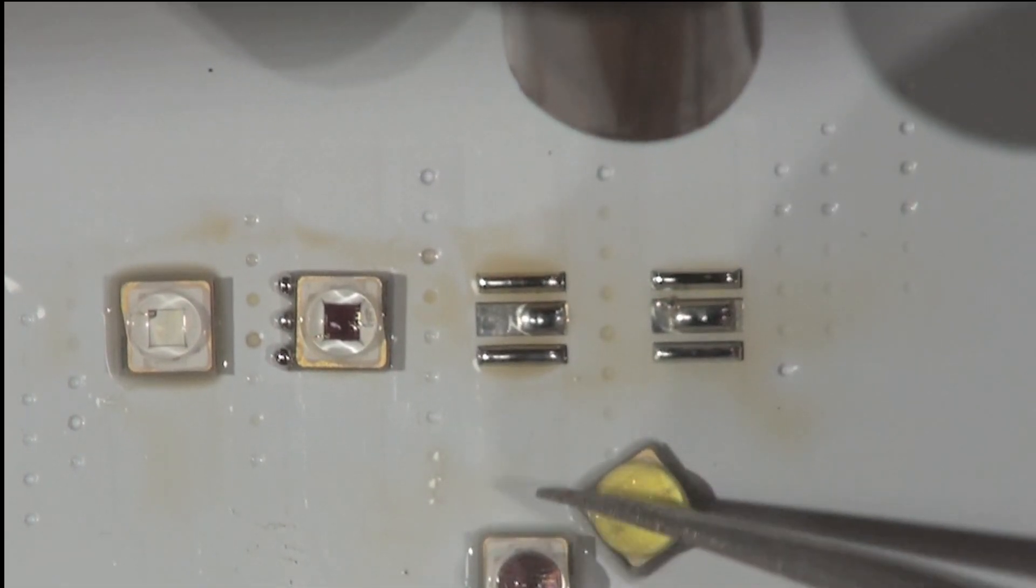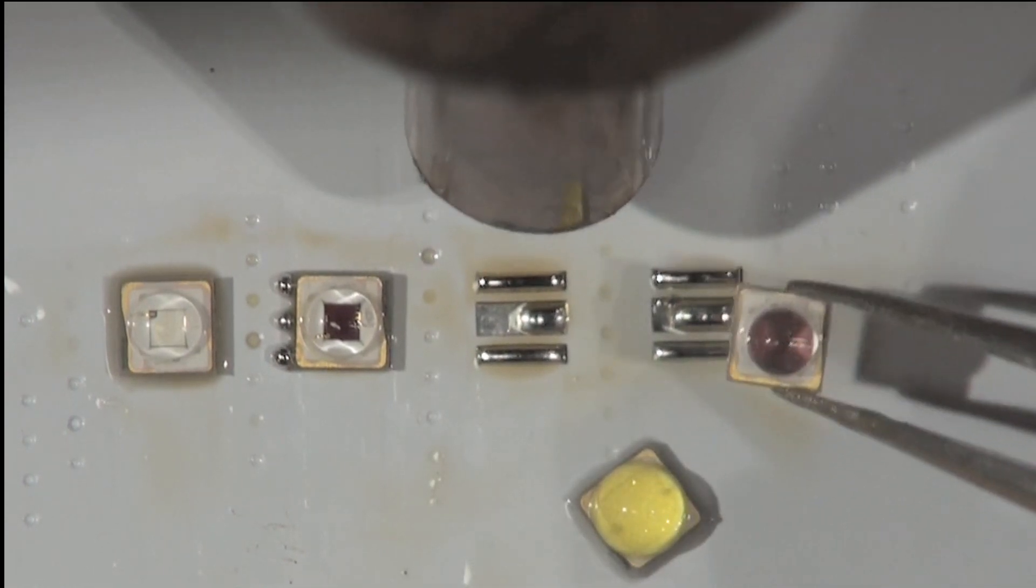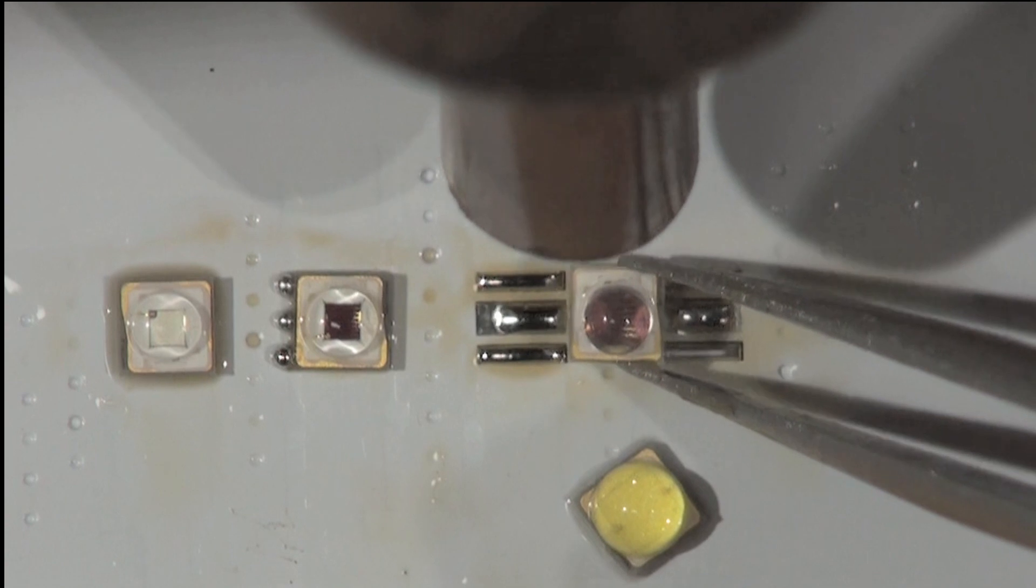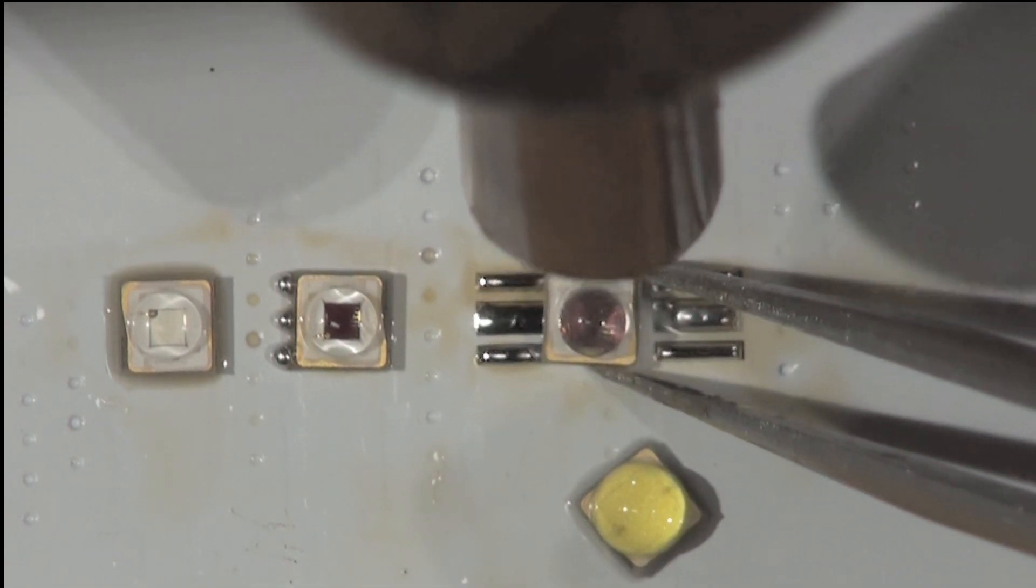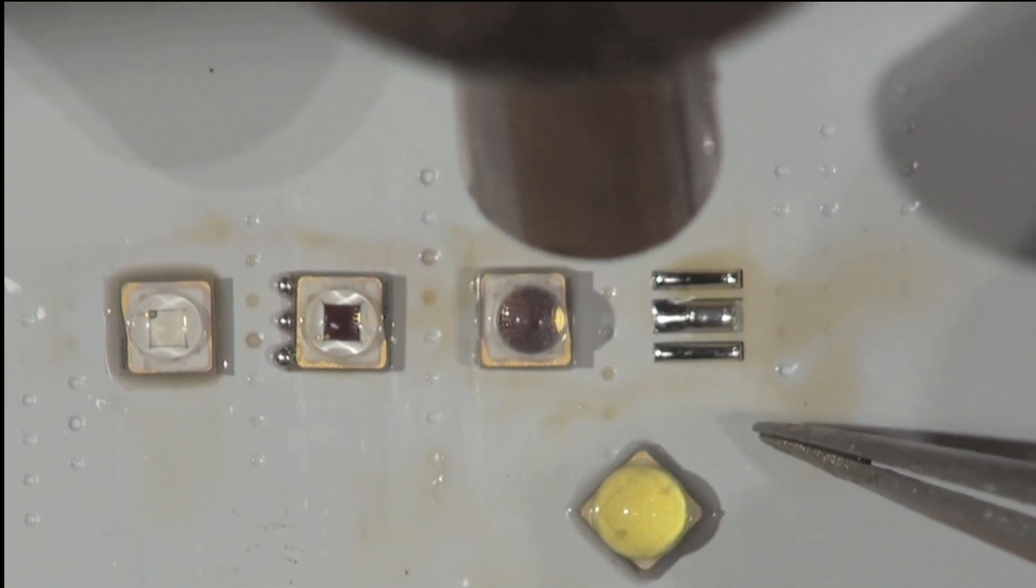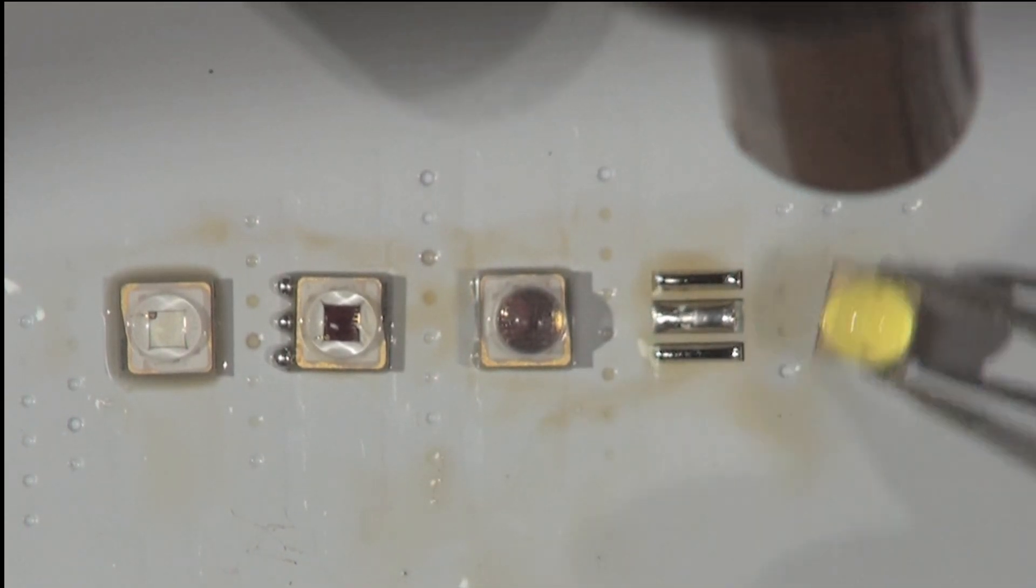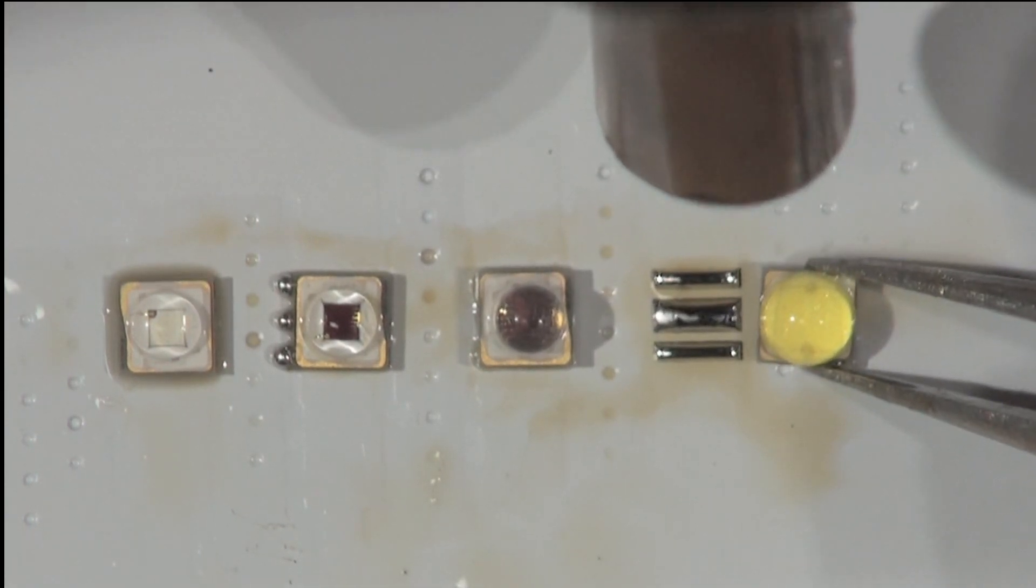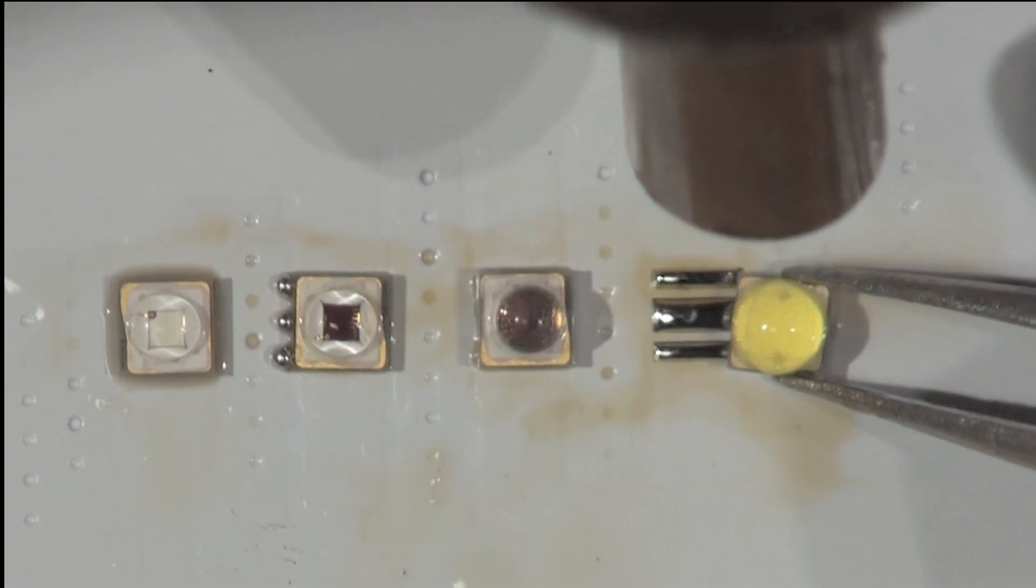Let's try again with this one. Let go of it. You can see it actually goes into position on its own. That's the power of the surface tension of the solder. That's what the surface mount process relies on.